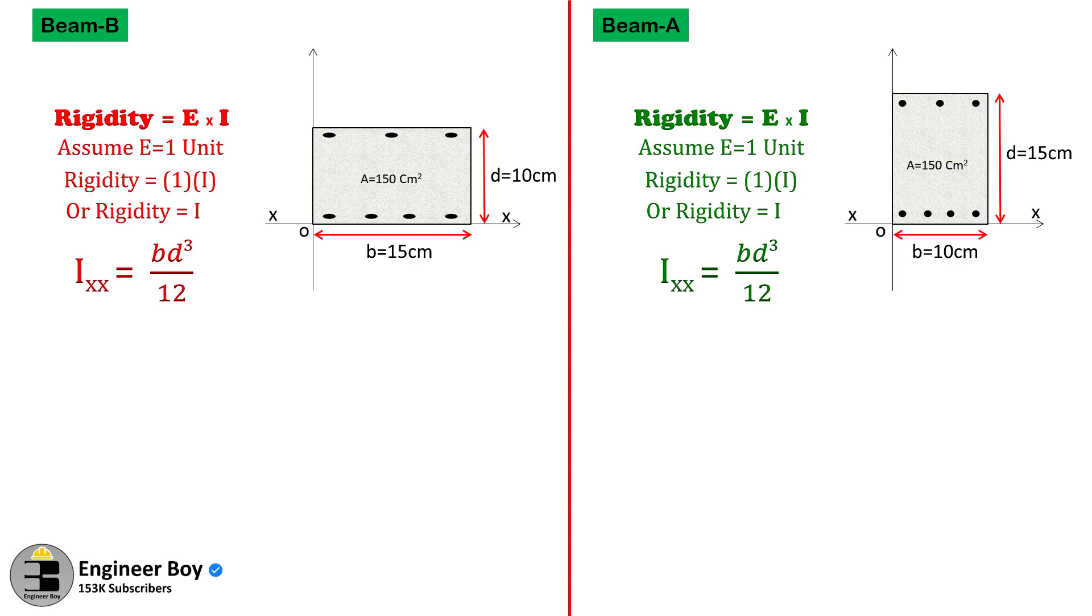Now plugging in values for b and d, we can get moment of inertia of beam A equals 2,812.5 cm⁴, and moment of inertia of beam B equals 1,250 cm⁴.